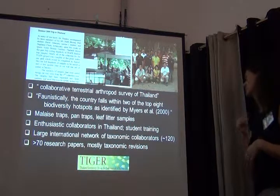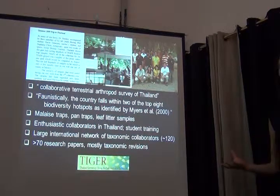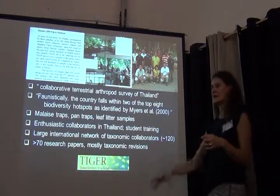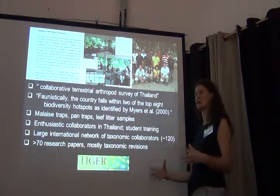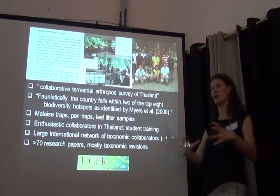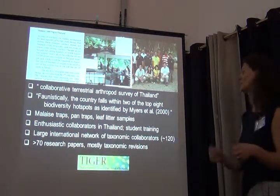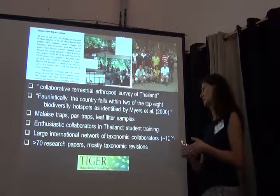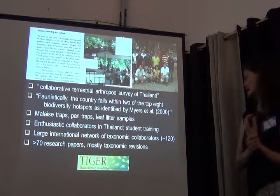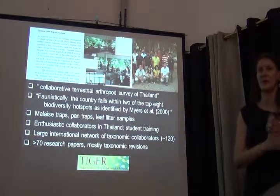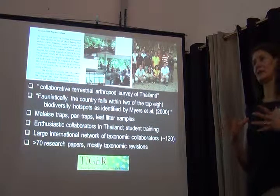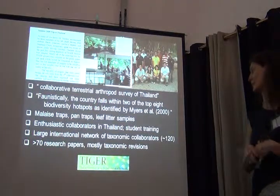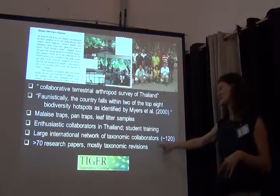TIGER is a collaborative terrestrial arthropod survey covering two biodiversity hotspots in Thailand. It used specialized collecting techniques including big passive trapping, Malaise traps, pan traps — little yellow dishes with soapy water — and leaf litter samples. What was great was enthusiastic local collaborators in Thailand, a lot of student training, involving graduate students closely to make a real impact. Exceptional about this project was the site.